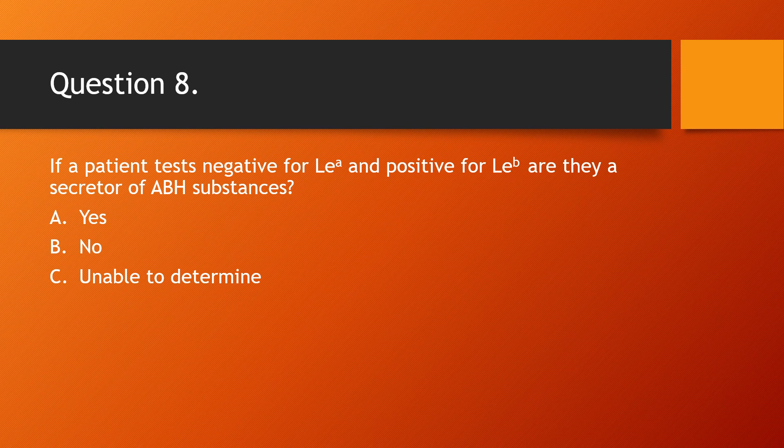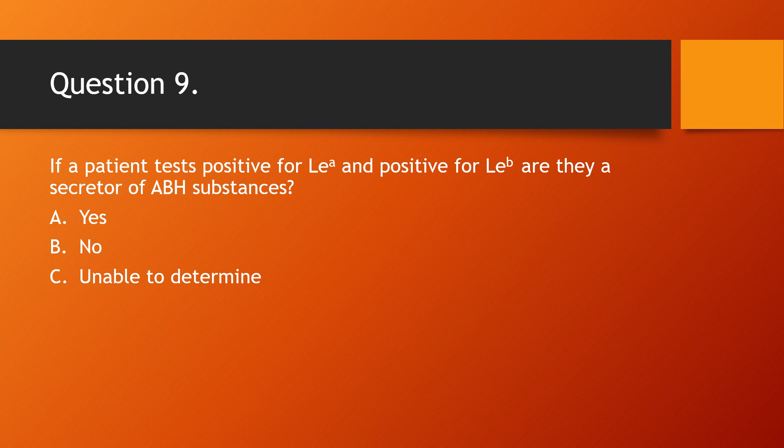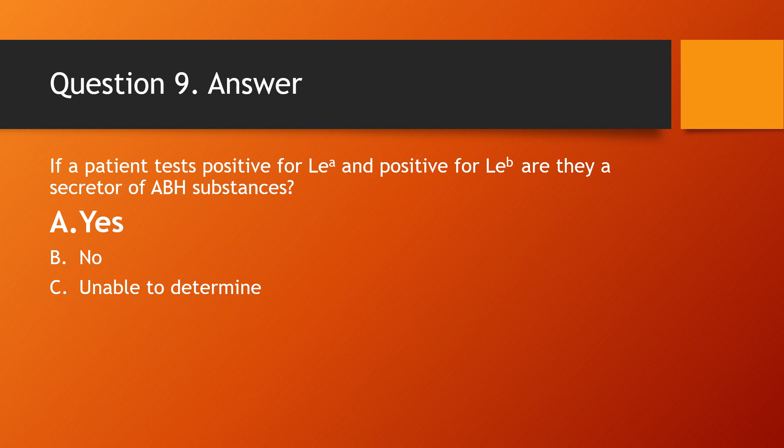Question 8: If a patient tests negative for Lewis A and positive for Lewis B, are they a secretor of ABH substances? The answer is yes — a person who is Lewis B positive is always a secretor of ABH substances. Additionally, if a patient tests positive for both Lewis A and Lewis B, they are also a secretor, because having Lewis B means they must be a secretor. Remember: if you have a Lewis gene but no secretor gene, you are only Lewis A positive; but if you have Lewis B, you must be a secretor. A Lewis A negative B negative individual can be a secretor or a non-secretor, but further testing is required to determine that.